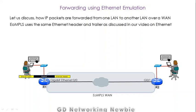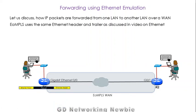Once router R1 receives this frame, it decapsulates it — removing the Ethernet header and Ethernet trailer. Now R1 has to forward this to router R2, so it re-encapsulates the packet, adding a new Ethernet header and trailer. This new Ethernet header will have the destination MAC address of R2.